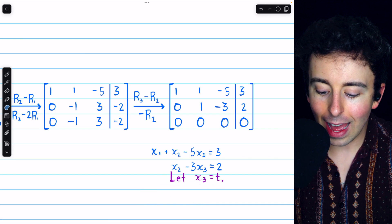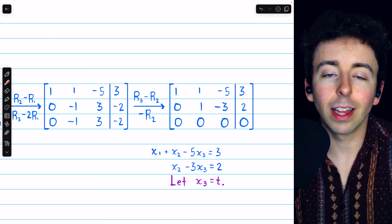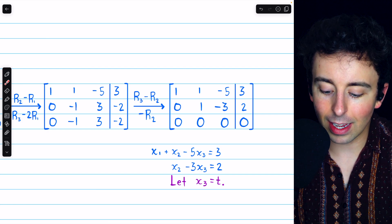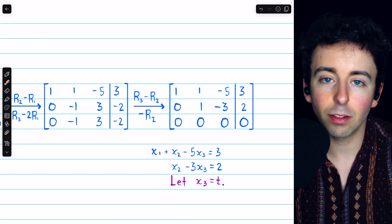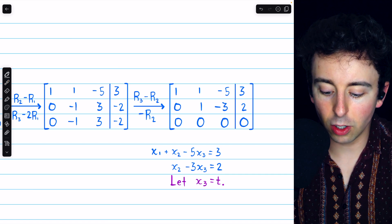Thus, we can let x3 equal an arbitrary parameter. x3 is what we call a free variable. We'll say that it equals t, and t is free to be whatever it likes. Then, we go through the same process as before, back substitution.